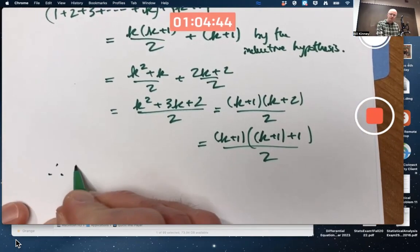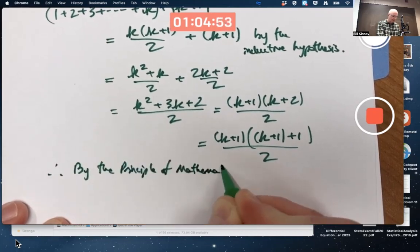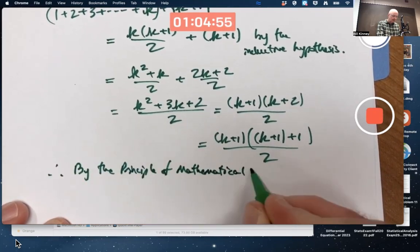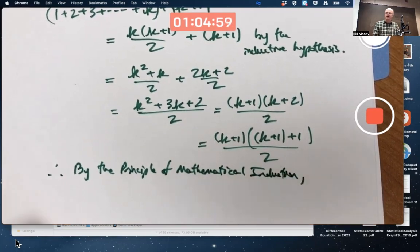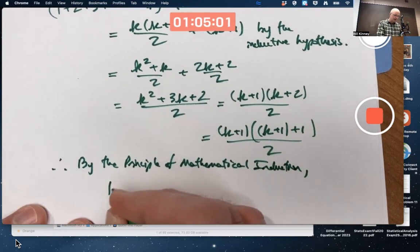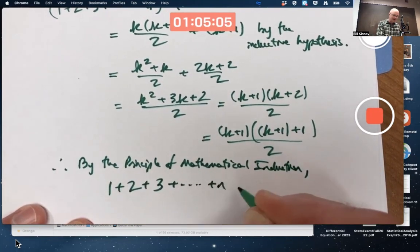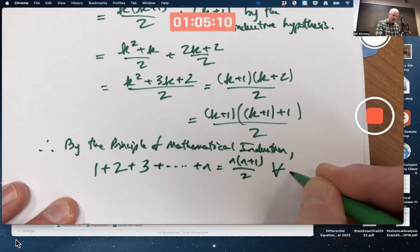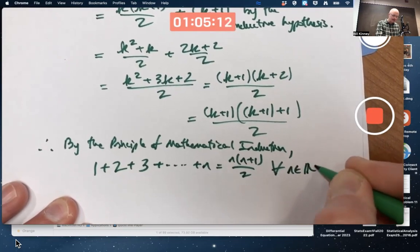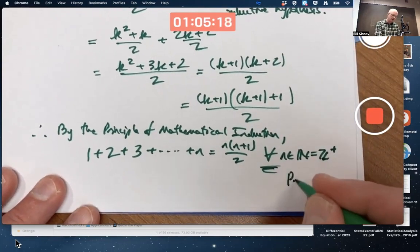Final thing you should say is, therefore, by the principle of mathematical induction, what can we conclude? We can conclude what we wanted to conclude. That the equation 1 plus 2 plus 3 through dot dot dot plus n equals n times n plus 1 over 2 for all positive integers n. Again, also called natural numbers. Emphasis once again on the for all. We're done. Praise the Lord.